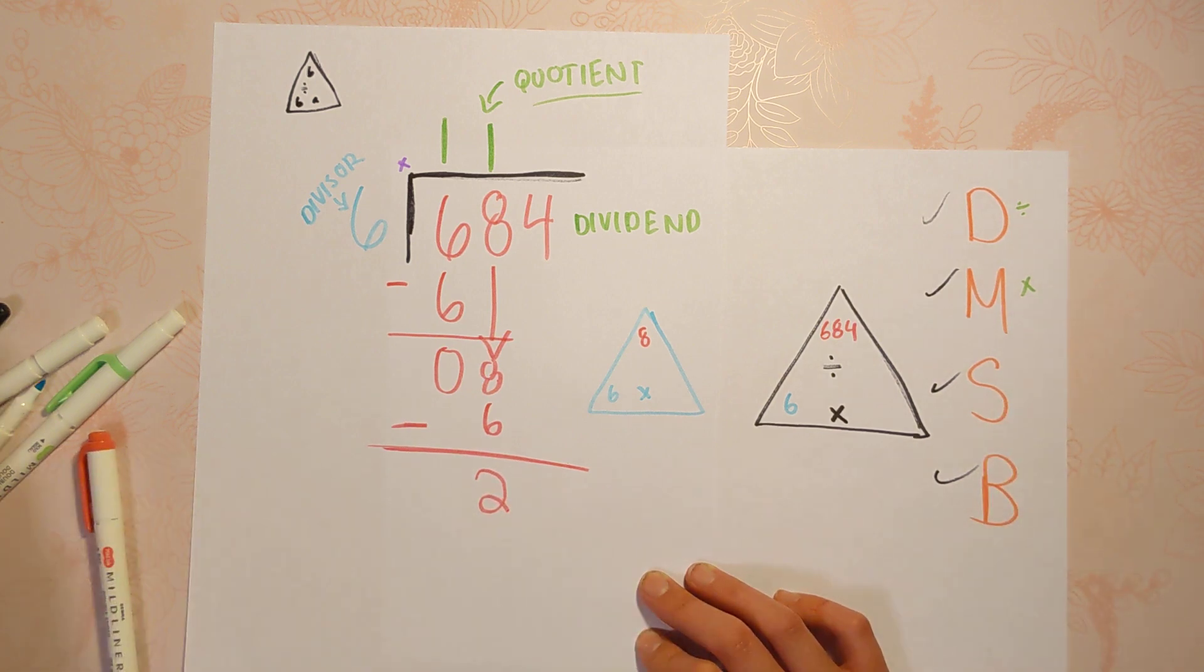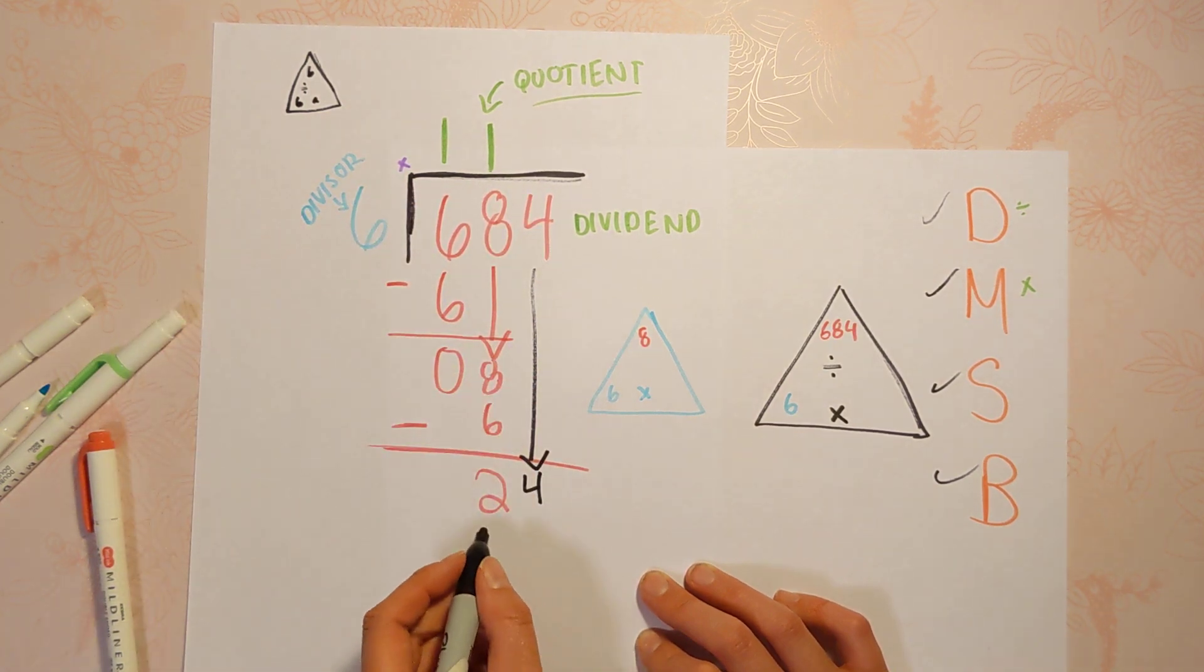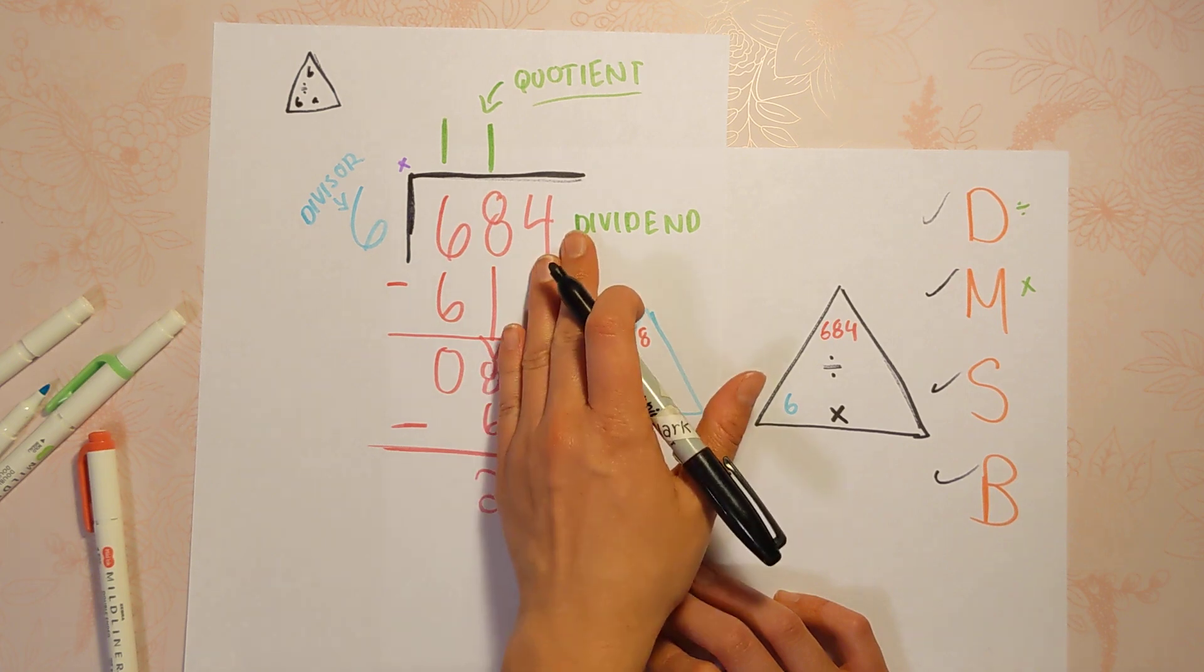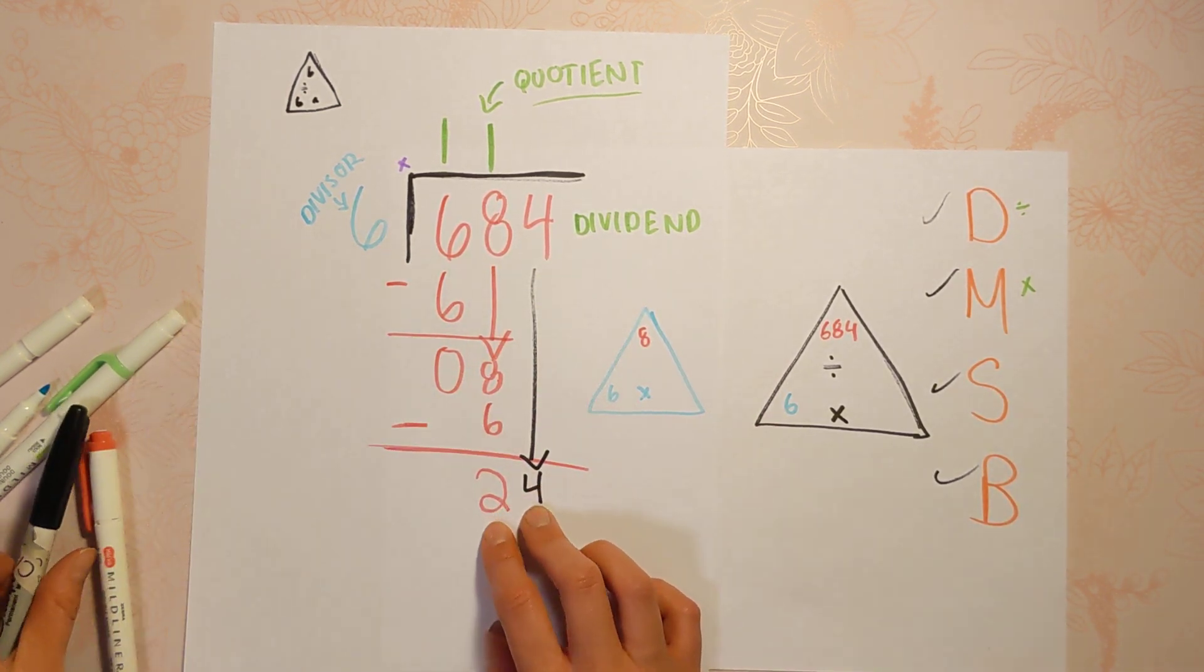Okay, that was subtract. Our next step is bring down. So now we're going to take the four and bring it down. So we're now left with 24. Not four, not eight, because you have this two left over. You have 24 left over.